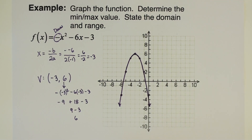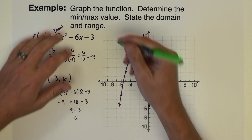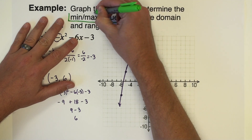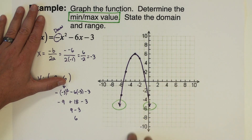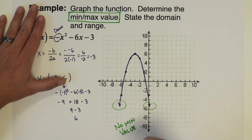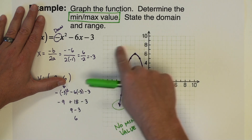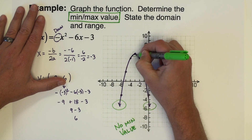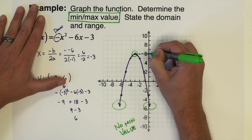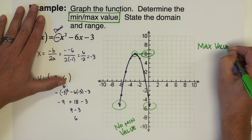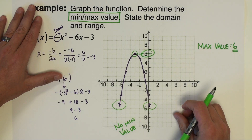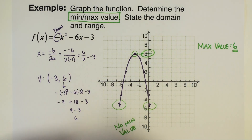Now let's determine the minimum or maximum value. This graph opens downward and keeps going down without stopping — it has no minimum value. However, it does have a maximum value up at the vertex. The maximum value is found by looking at the y-coordinate of the vertex, which is 6. So this graph has a maximum value of 6.